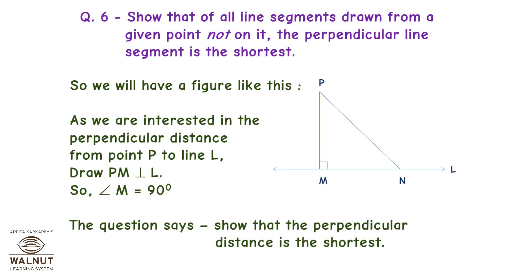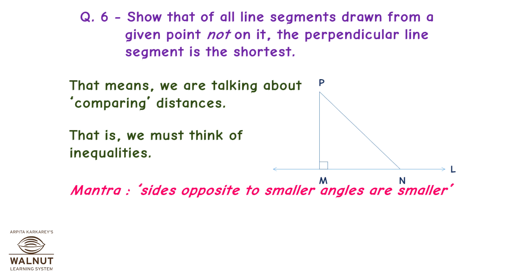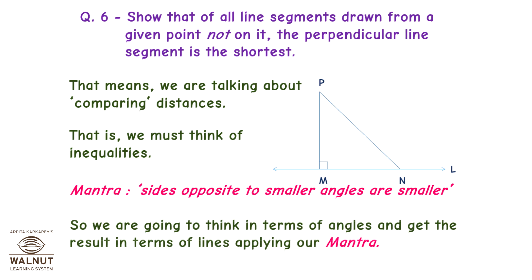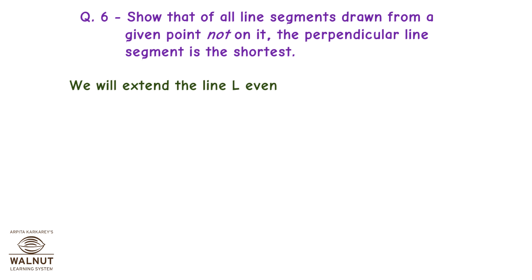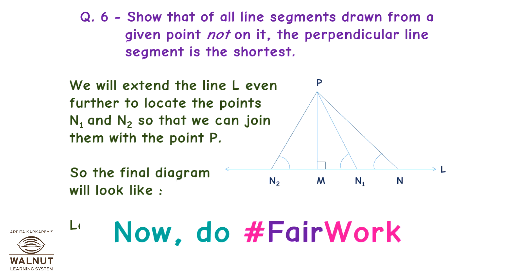The question says, show that the perpendicular distance is the shortest. That means, we are talking about comparing distances. That is, we must think of inequalities. Mantra: sides opposite to smaller angles are smaller. So, we are going to think in terms of angles and get the result in terms of lines applying our mantra. We will extend the line L even further to locate the points N1 and N2 so that we can join them with the point P. So, the final diagram will look like this. Look at the angles marked here. Now, do fair work.